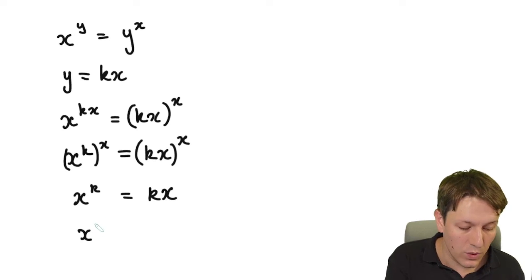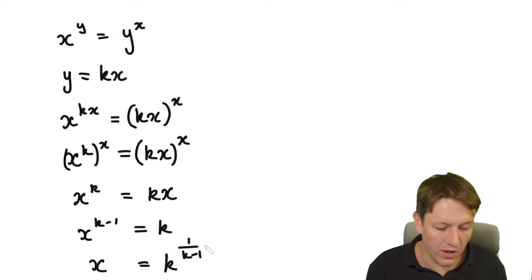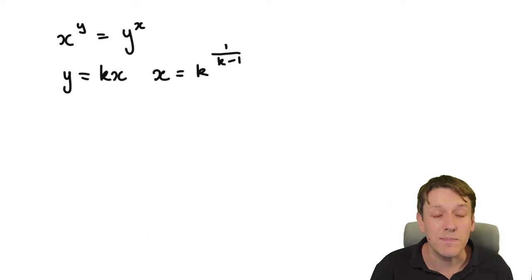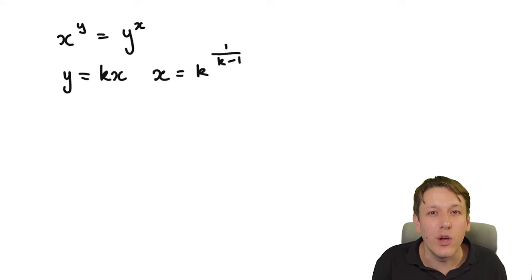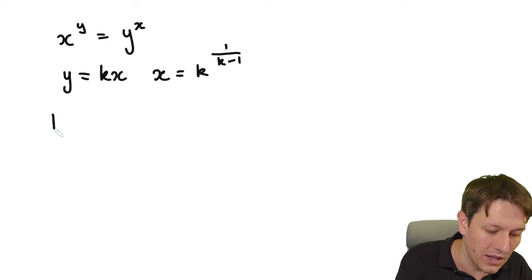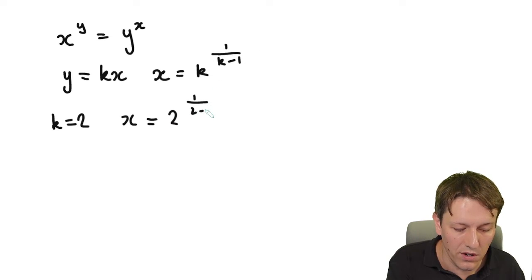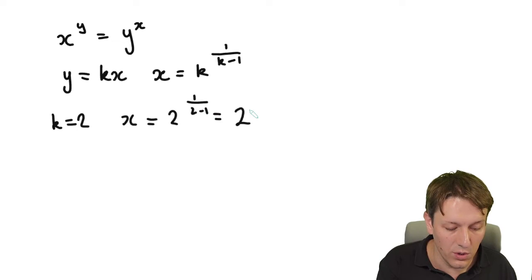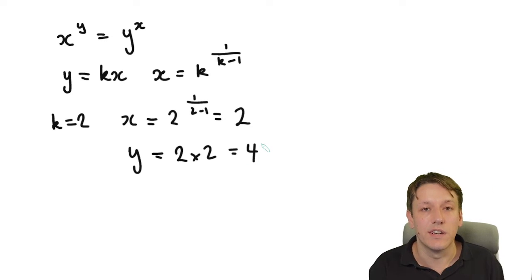Dividing both sides by x gives x to the k minus 1 equals k, so x equals k to the 1 over (k minus 1). This parameter k gives a formula for solutions to x to the y equals y to the x. Taking k equals 2 gives x equals 2 to the 1 over 1, which is 2, and y equals k times x equals 4 — recovering the solution we already knew.